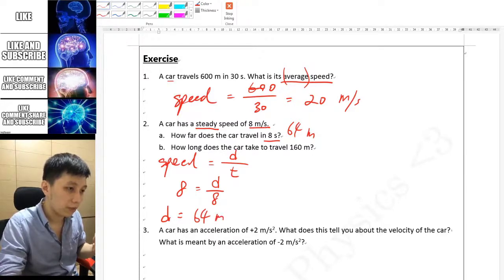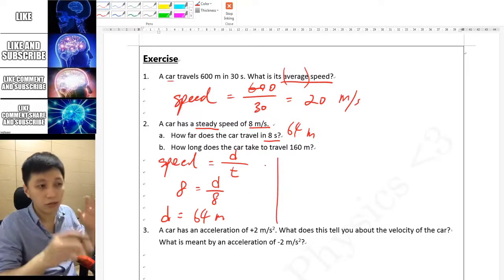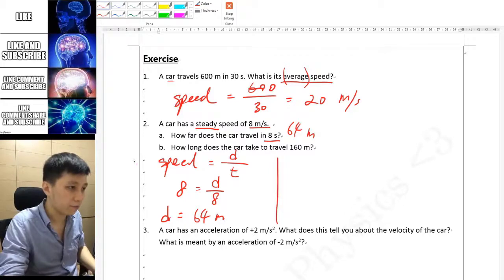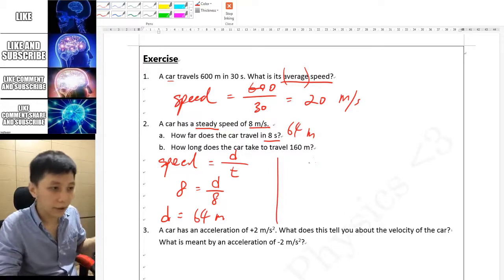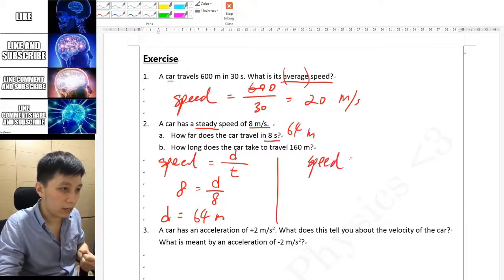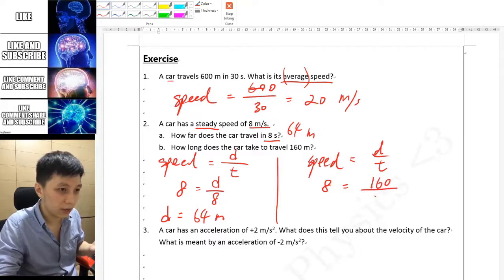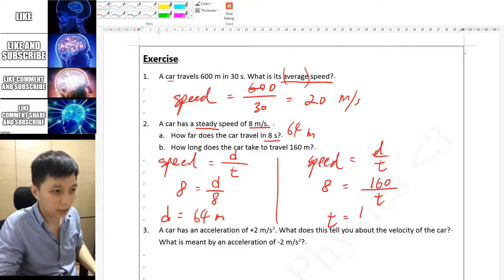For part b it will be more or less the same, so I will still put down the equation. Once again, speed is still 8, distance this time becomes 160, and time is unknown. Then you can find out the time by calculating 160 divided by 8, and that means 20 seconds.